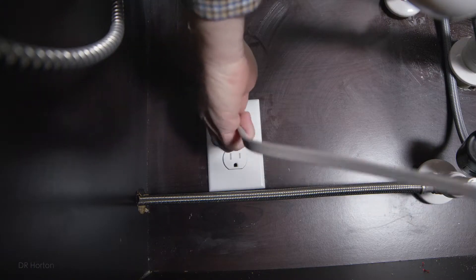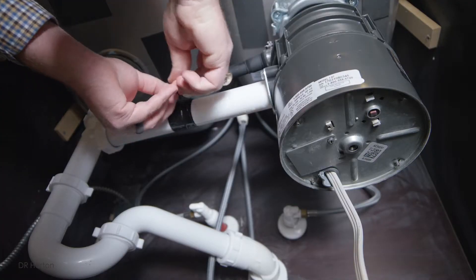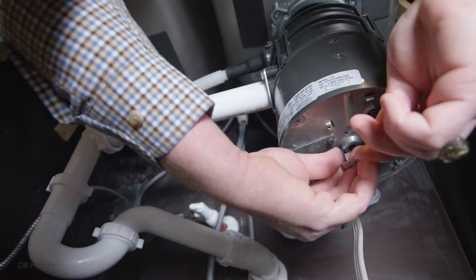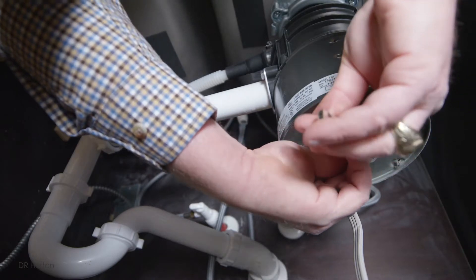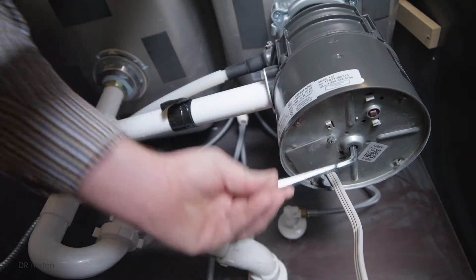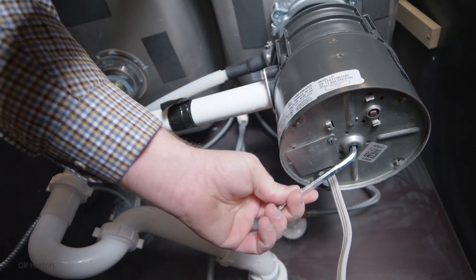If operation is still not optimal, unplug the unit in the cabinet and use the supplied Allen wrench to turn the blades. They may seem tight at first, but eventually the wrench will make a full rotation. Re-plug the unit, run the water, and test it again.